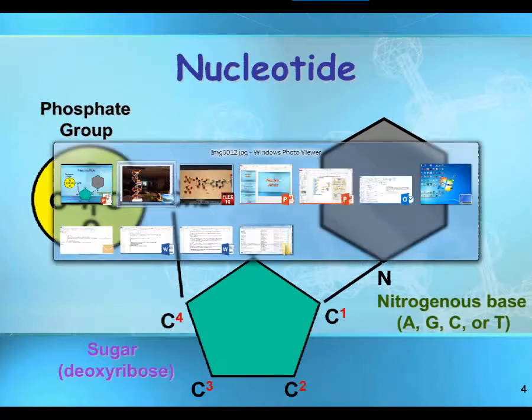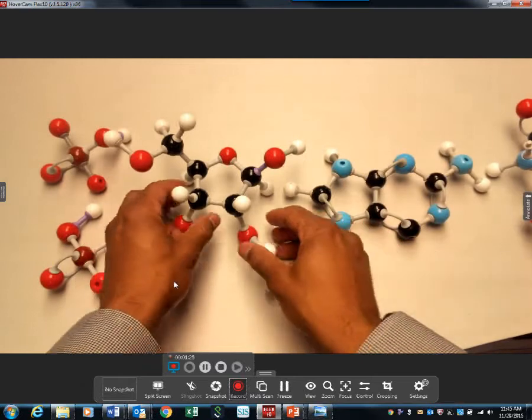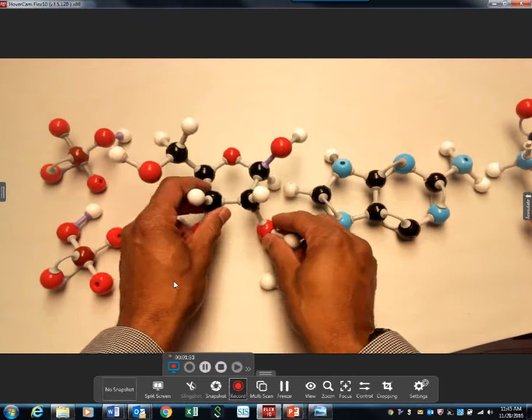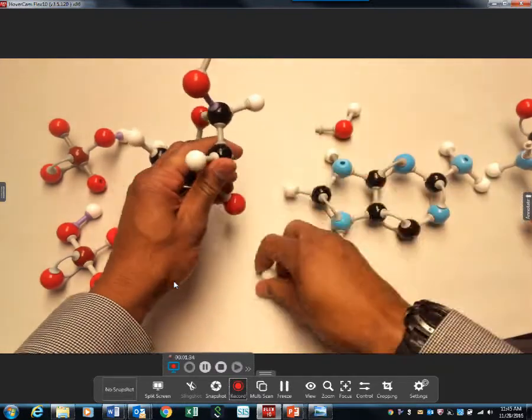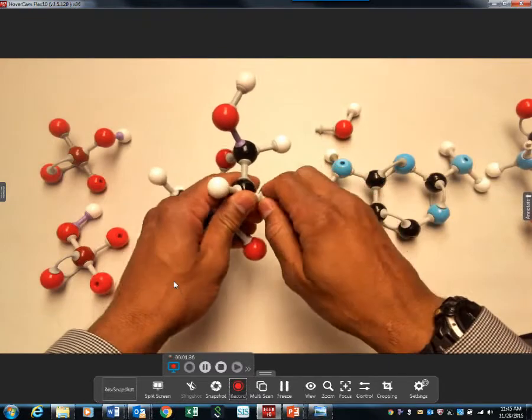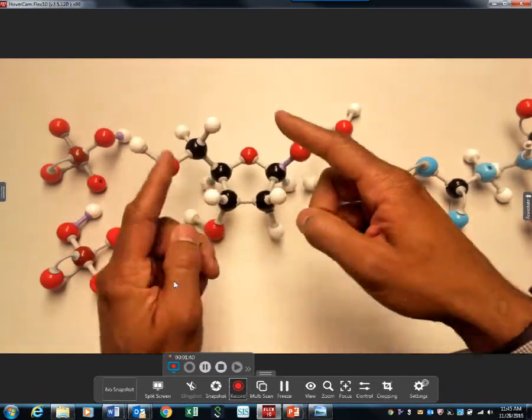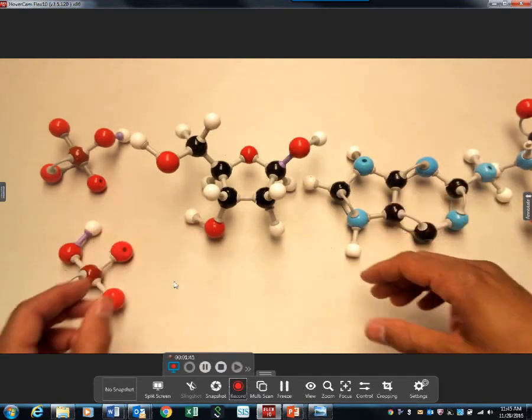Now the first thing you see - I need to do something. This is ribose, but we're talking about deoxyribose. So how do you get deoxyribose? You deoxify - you take an oxygen off, and now this is the sugar. This is the sugar that makes deoxyribose. Now get rid of that OH.